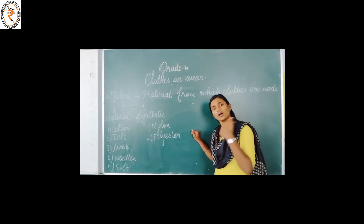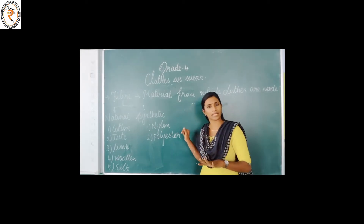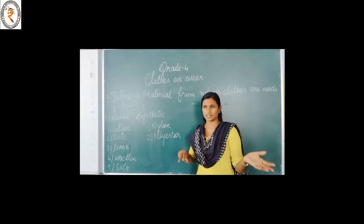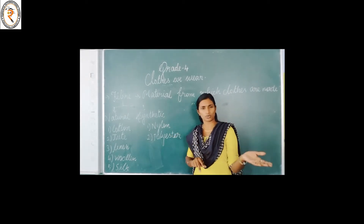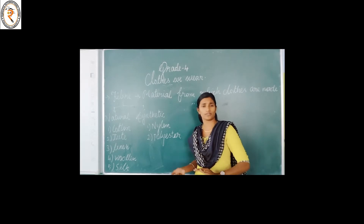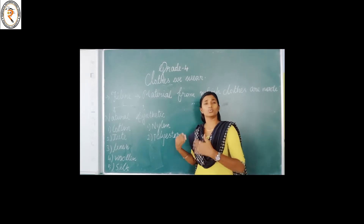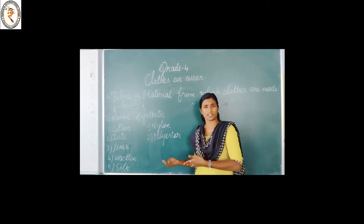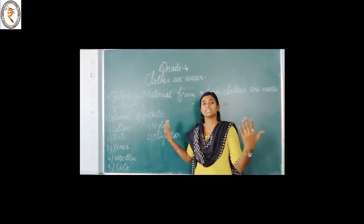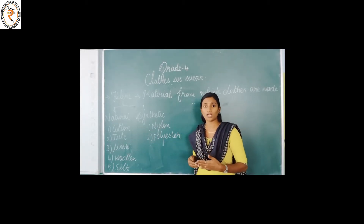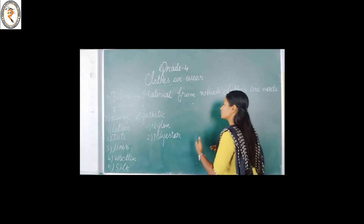Are we all wearing the same type of clothes? No. Cotton clothes we are wearing, jute clothes we are wearing, woolen clothes we are wearing, silk clothes we are wearing, nylon, synthetic — so many different types of clothes we are all wearing.